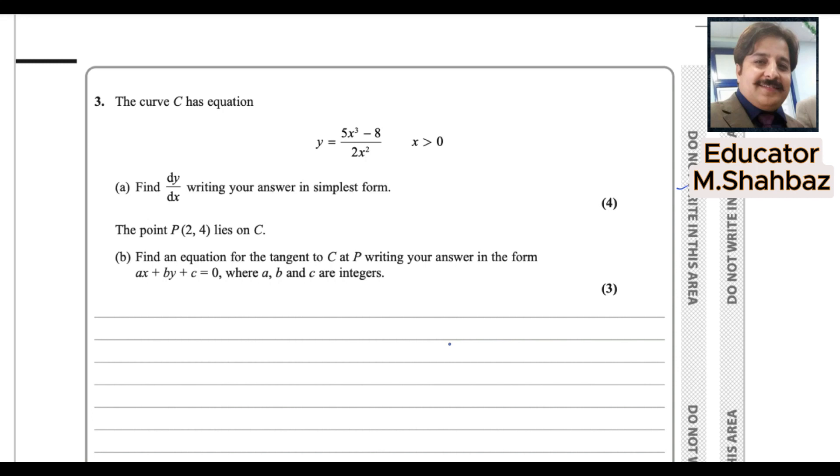Okay, in question number 3, the curve C has equation y equals 5x³ minus 8 divided by 2x². x is greater than 0. Find the value of dy by dx. Actually, you need to find dy by dx. It means you have to differentiate y with respect to x.